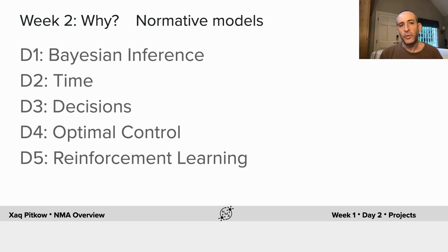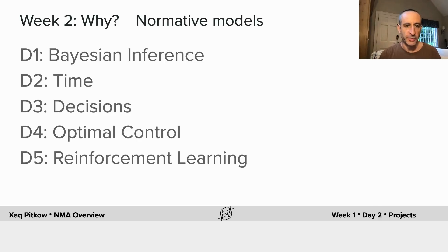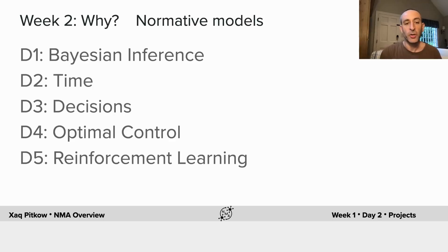In week two, we'll talk about normative models. These are models that say what should an animal do when confronted with a given task. We'll talk at the beginning about foundations in Bayesian inference, then we'll talk about time — when things evolve over time and have dynamics. We'll talk about decisions and how you use those decisions to control things or act. And finally, when you don't know exactly the structure of the world and have to learn it, we use reinforcement learning to describe that process.